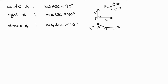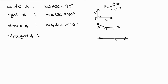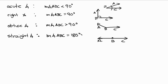If we open up the angle even more, we'll end up with something called a straight angle. Let me draw it — there's ABC — and a straight angle is equal to 180 degrees.